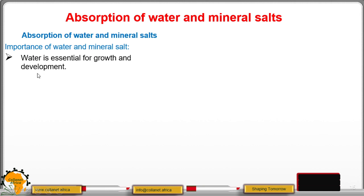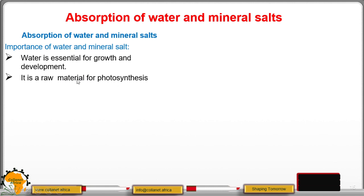First, water is essential for growth and development. When plants lack water, they have stunted or slow growth. Water is a raw material for the process of photosynthesis, meaning water reacts with carbon dioxide in the presence of light energy and chlorophyll to produce simple carbohydrates.